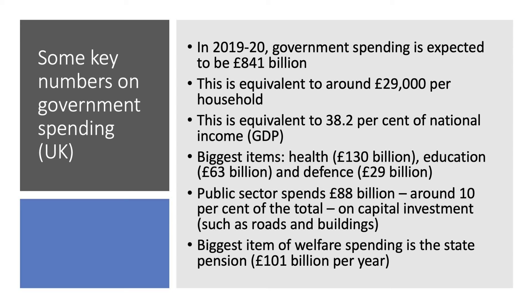Some key numbers on government spending in the UK: in 2019-2020, government spending was £841 billion — that's around £30,000 per household and equivalent to just under 40% of the value of our national output. The three big items are healthcare at £130 billion a year, education at well over £1 billion a week, and defence spending at just under £30 billion. The public sector spends about £90 billion a year on capital investment such as new hospitals, roads, and buildings. The biggest item of welfare spending is the state pension at £101 billion per year.